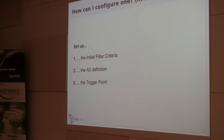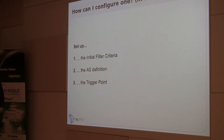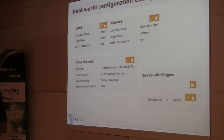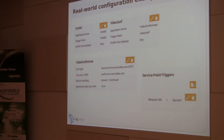In summary, how do you configure an application server? With the Initial Filter Criteria — the application server definition and the trigger point. The trigger point is the if-condition; the application server definition is basically the SIP URI to which you send your SIP message. This is a real-world example from the VoiceBlue CRM application by ng-voice. We have a video conference application server defined here, pointing to conference.crm.com on port 5070, with the condition: if the request URL matches 'sip:conf', send it to the application server.